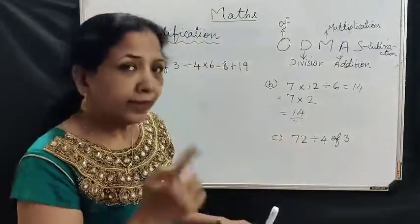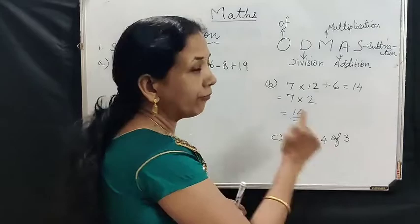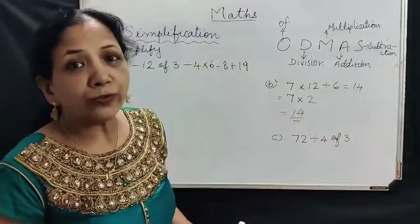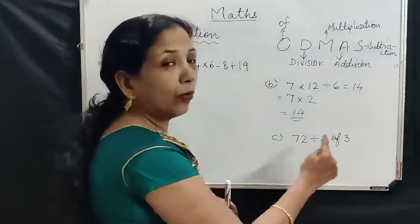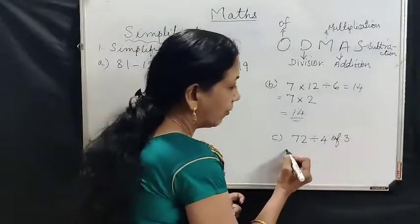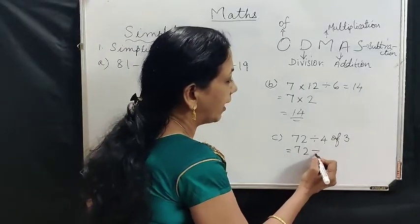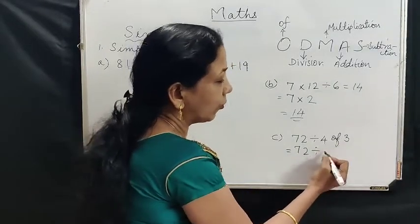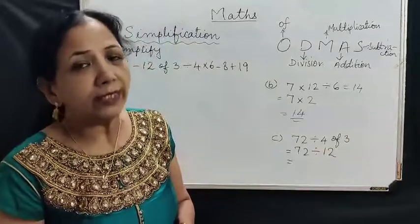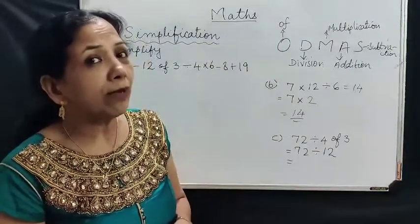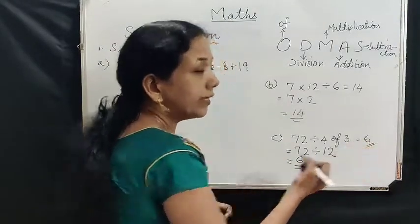Sometimes addition and subtraction are also there, then we do those as well. Here given: 72 divided by 4 of 3. As per the rule, what do we do first? 'Of' comes first. What is 4 of 3? 4 into 3, that is 4 times 3 — so 4 threes are 12. Now divide: 72 divided by 12. In the 12 times table, 12 sixes are 72. So the answer is 6.